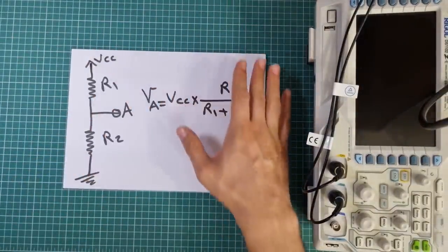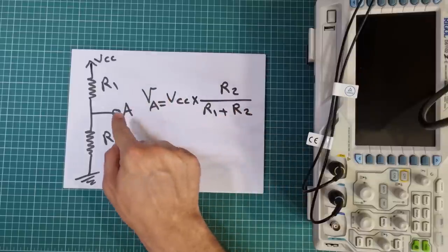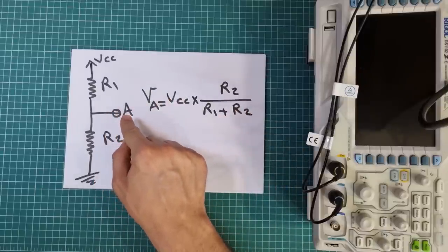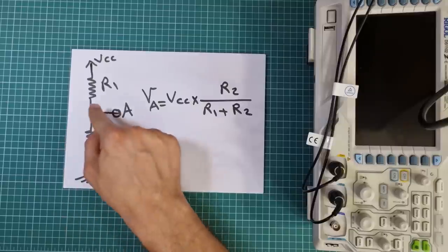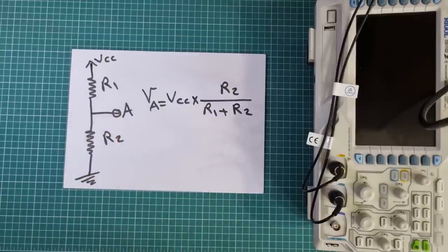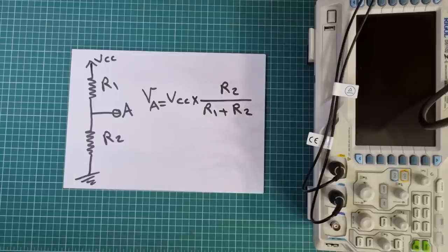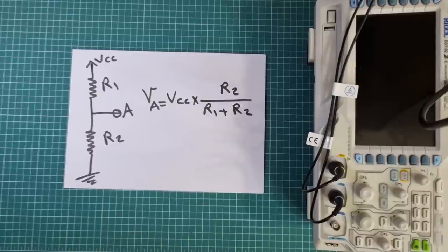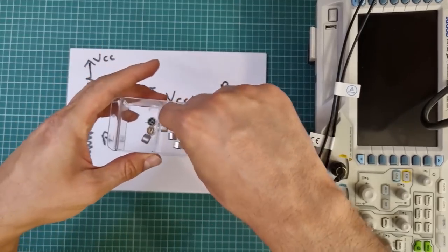This is a simple voltage divider. Voltage on point A has a direct relationship with R2 value and an inverse relationship with R1 value. We can replace either R1 or R2 with a microphone, and then voltage change on point A will present the resistance change on the microphone terminals and eventually present the sound wave in the environment.